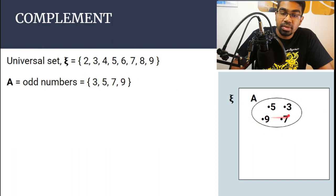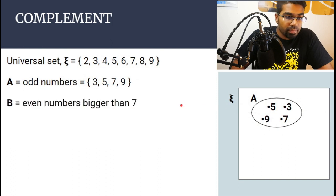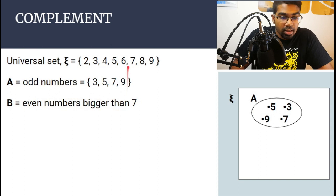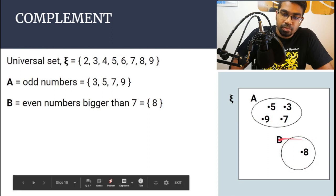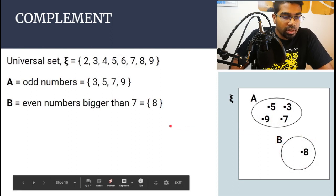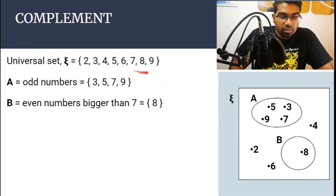Set B is defined as even numbers bigger than seven. The only even number bigger than seven here is eight, so B contains just eight. This is how we draw set B.